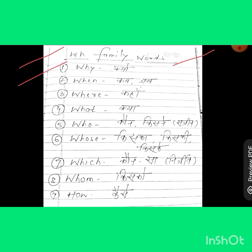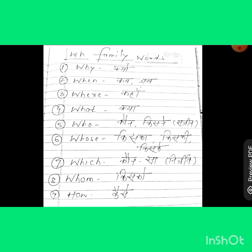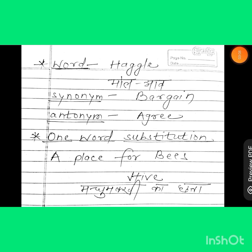The first WH word is 'why', which means 'kyun'. The next one is 'when', which means 'kab' or 'jab'. 'Where' means 'kahan'. 'What' means 'kya'. 'Who' means 'kaun' or 'kisne' — 'who' is used for living things, i.e., for 'sajiv'. 'Whose' means 'kiska', 'kiski', 'kiske'. 'Which' means 'kaun sa' — this word is used for non-living things, i.e., for 'nirjiv'. 'Whom' means 'kisko'. And 'how' means 'kaise'.